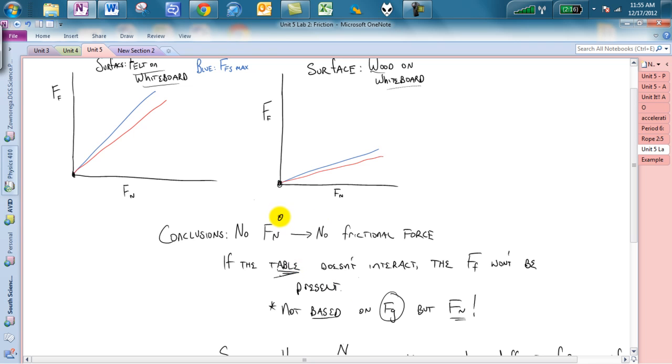Again, this is normal force by the table. So, all of this, all these normal forces is by the table, or whatever surface is causing that frictional force. So, I want us to clue in on that. That's number one.